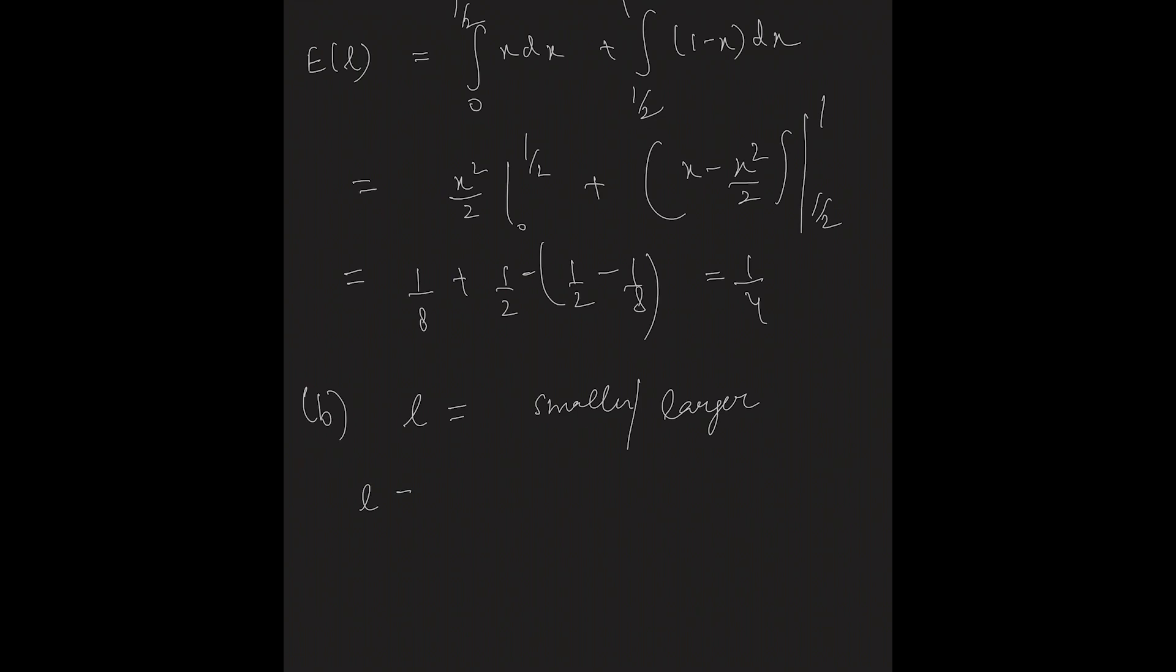So, l can be written as x upon 1 minus x when x is less than half and 1 minus x upon x when x is greater than or equal to half.